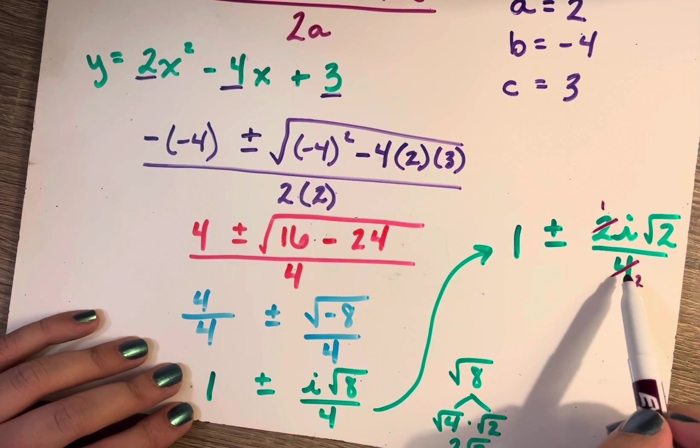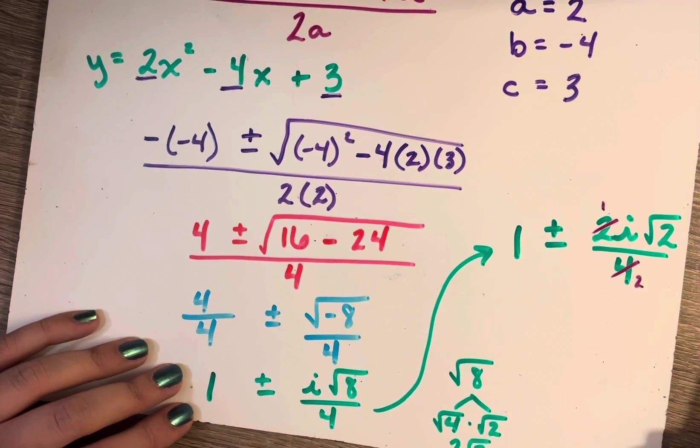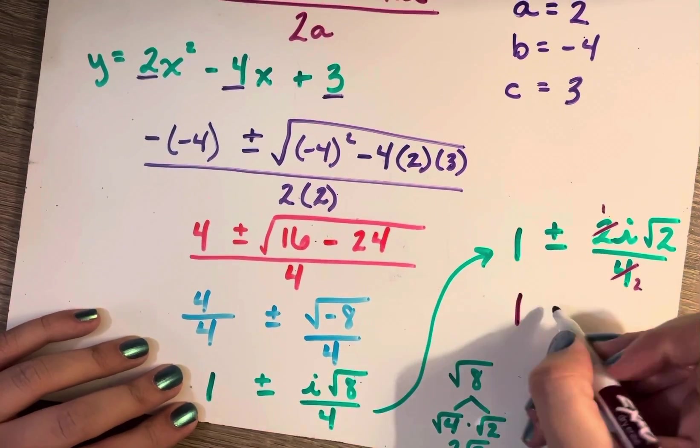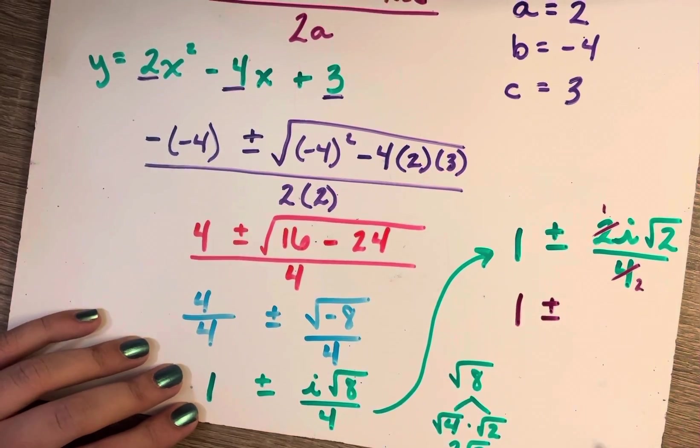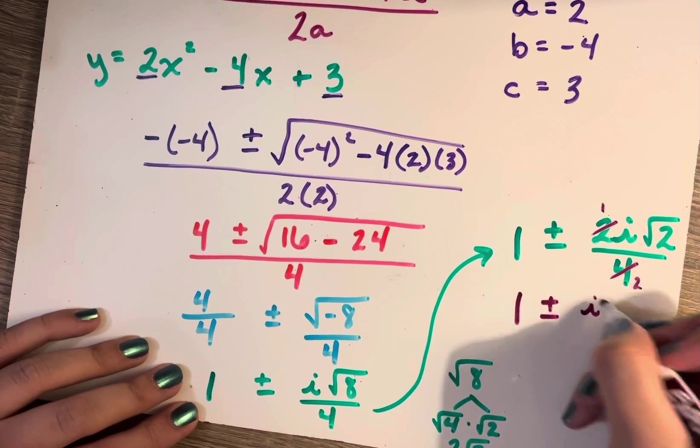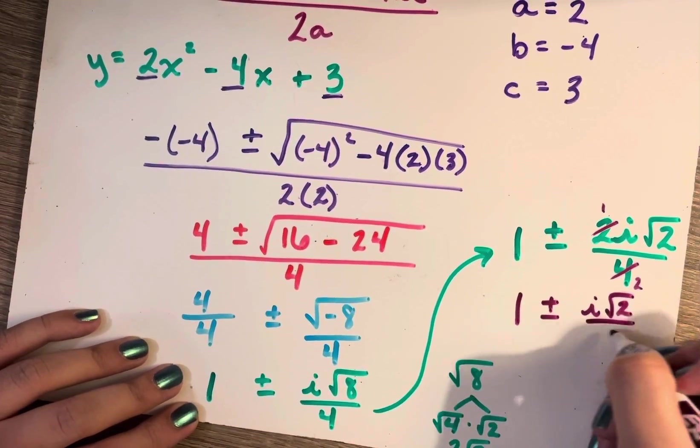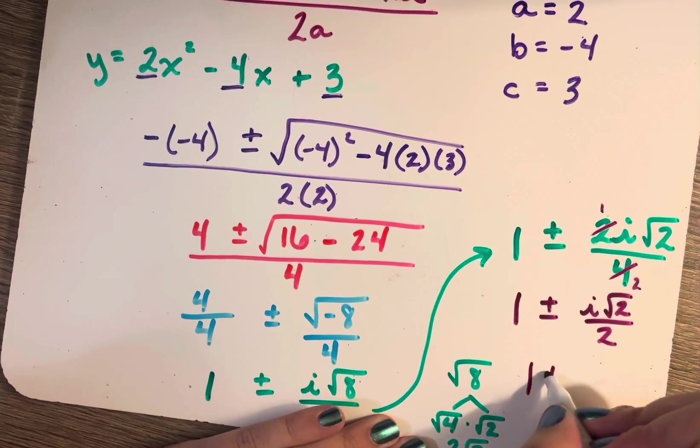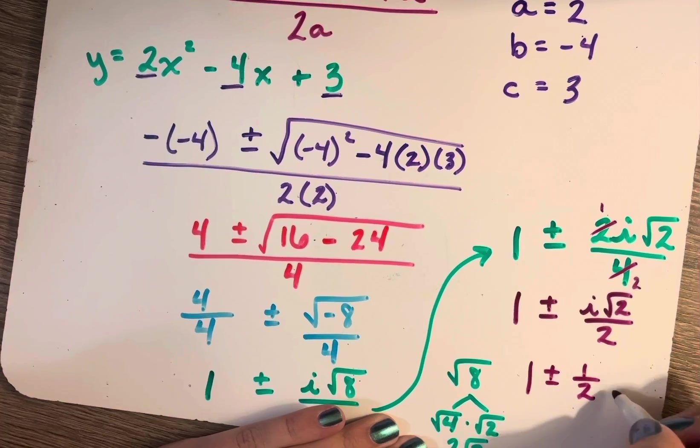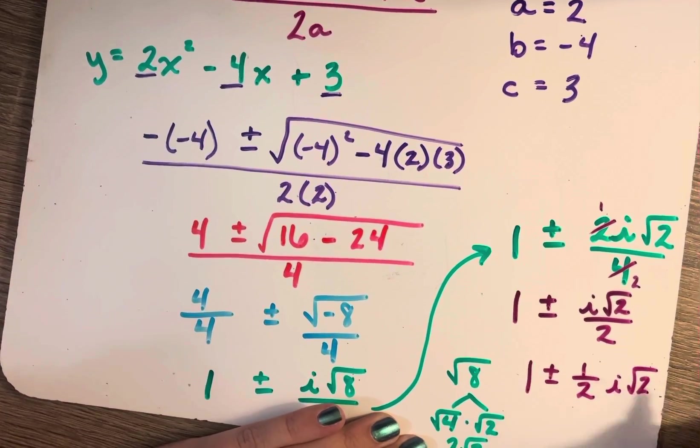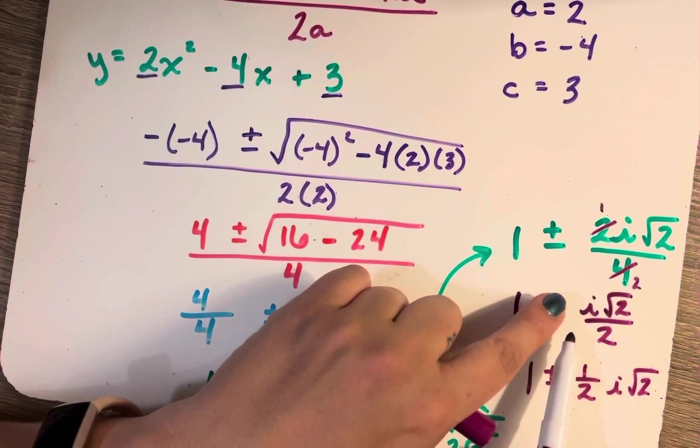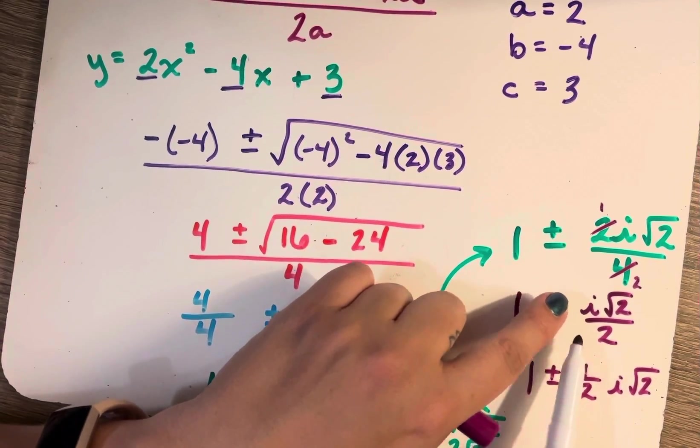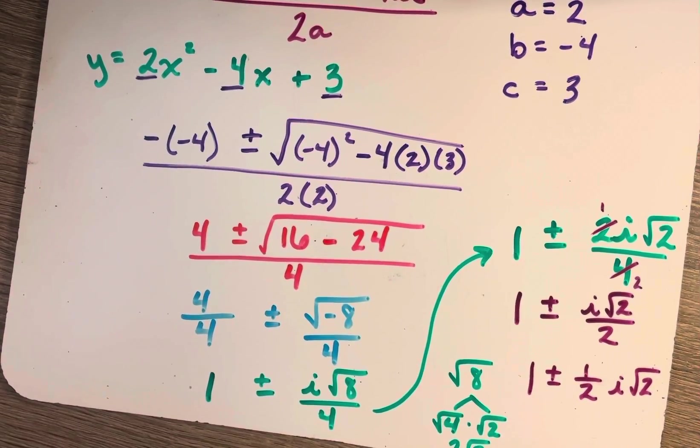Since 2 is a factor of 4, 2 times 2 gives me 4, 2 times 1 gives me 2. So my final answer is 1 plus or minus i radical 2 over 2. So just taking this out as a fraction in front of your radical.